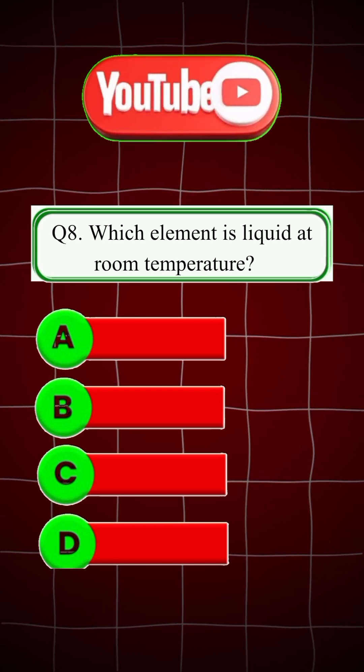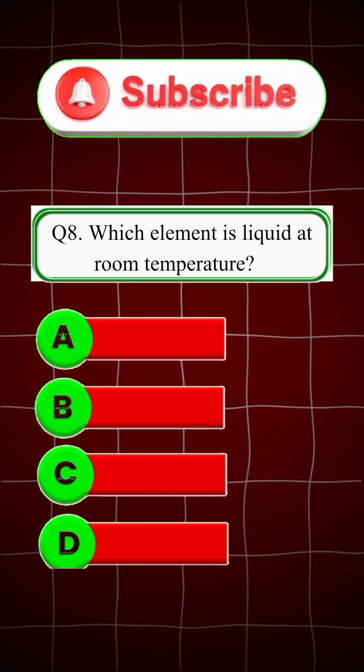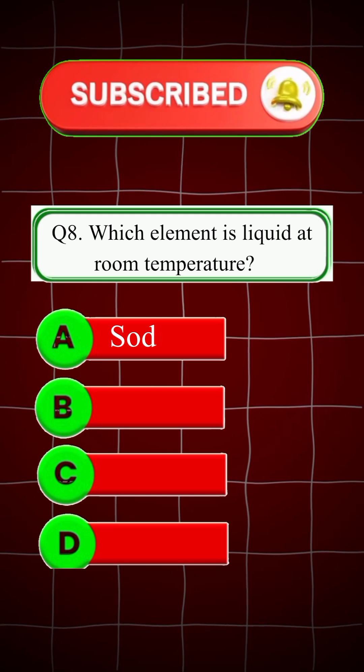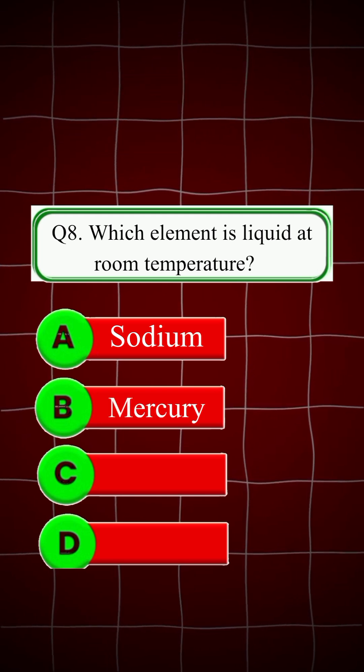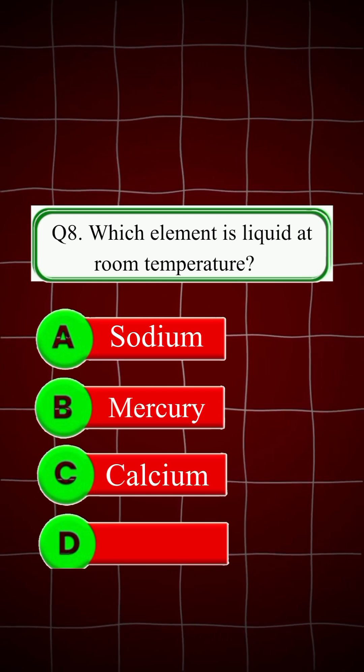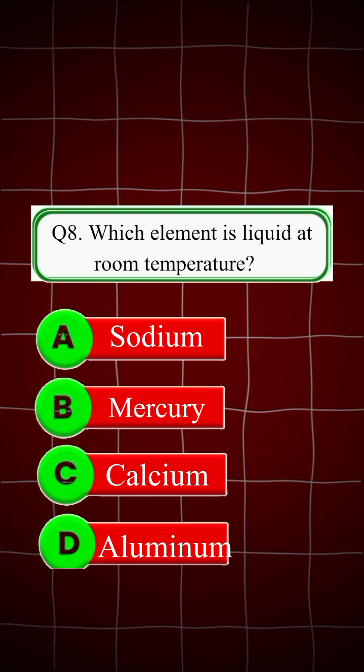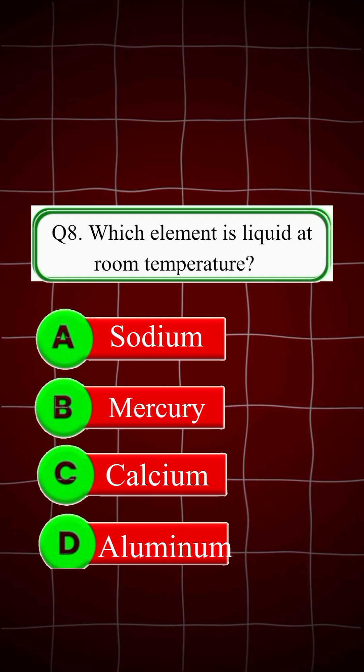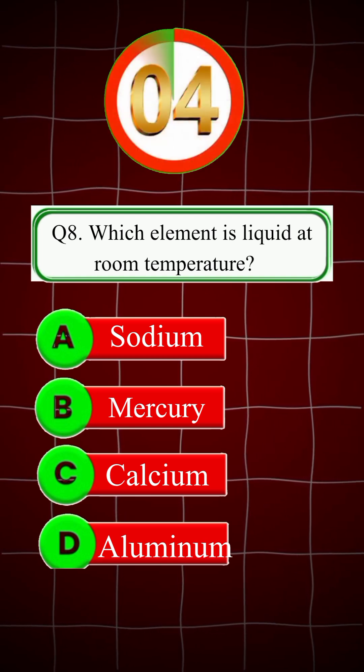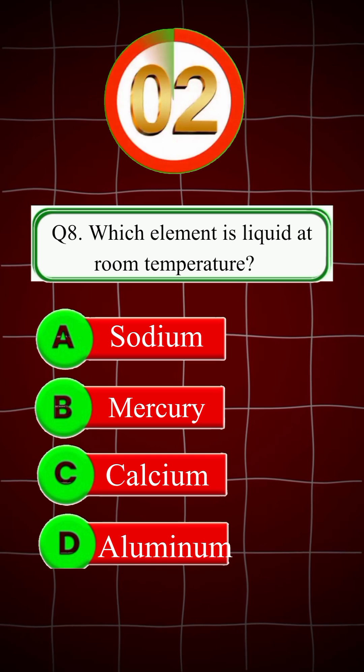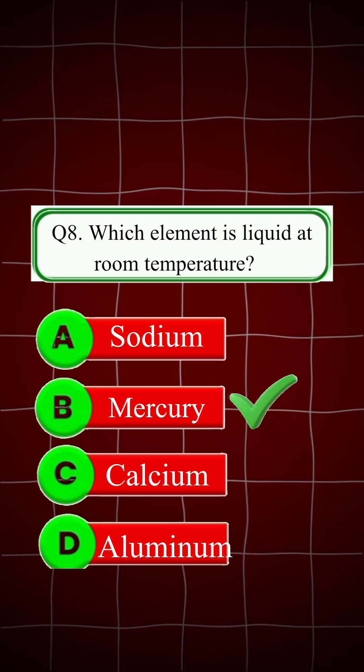Question 8: Which element is liquid at room temperature? A. Sodium, B. Mercury, C. Calcium, D. Aluminium. Right answer is B, Mercury.